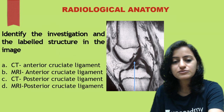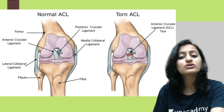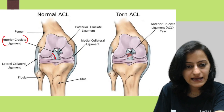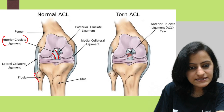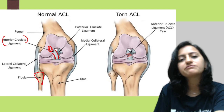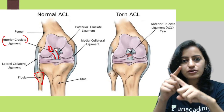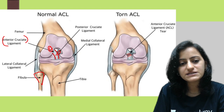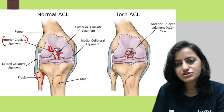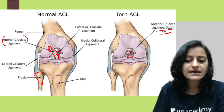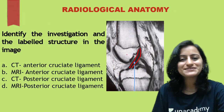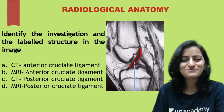The anterior cruciate ligament originates from the lateral femoral condyle — you can see it coming anteriorly near the fibula side, confirming it is the lateral femoral condyle. Note the crossing of the two ligaments: the posterior one is the PCL, and this is the ACL. The torn ACL will appear hyperintense on MRI. I hope this is clear — thank you so much for watching.